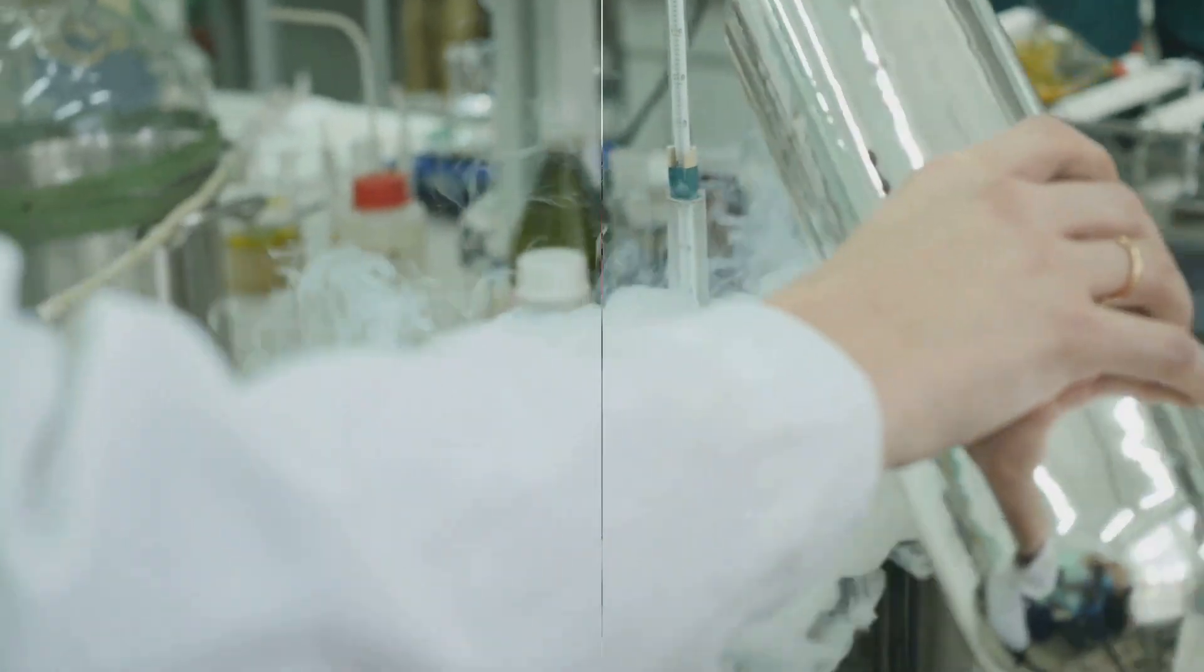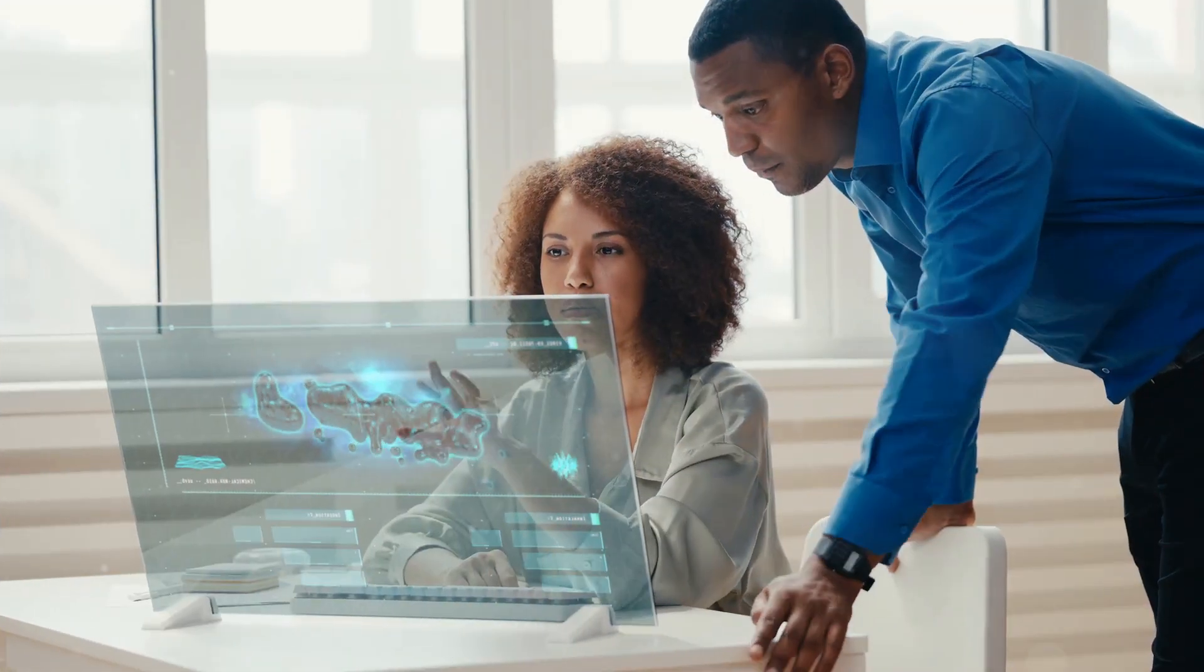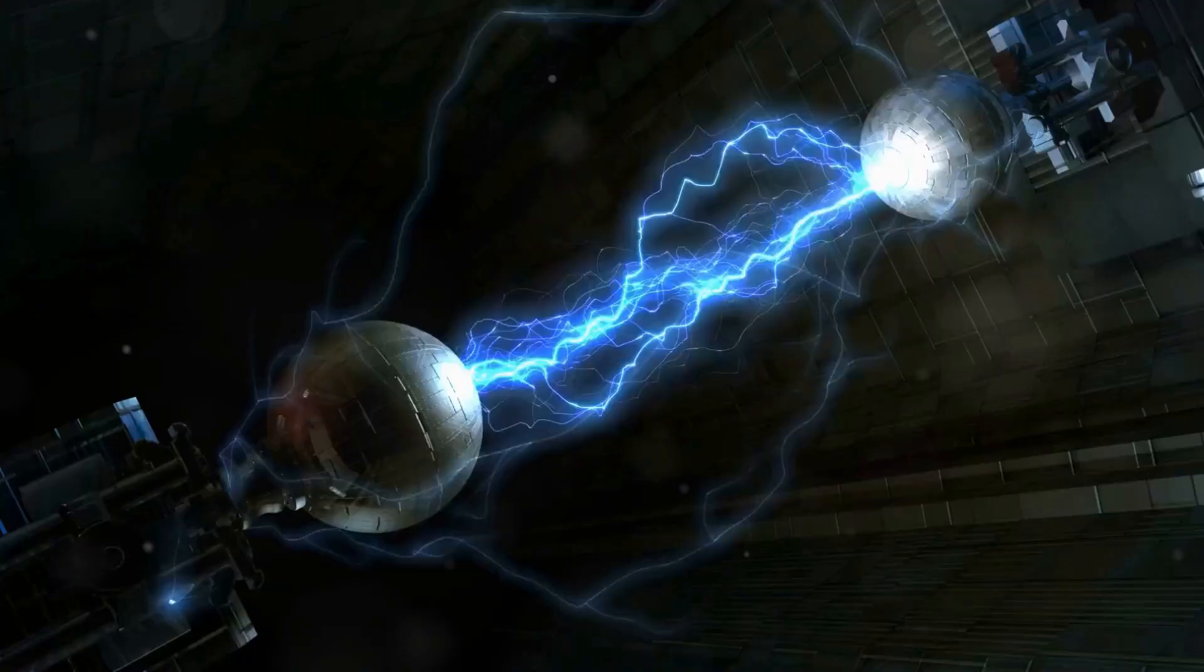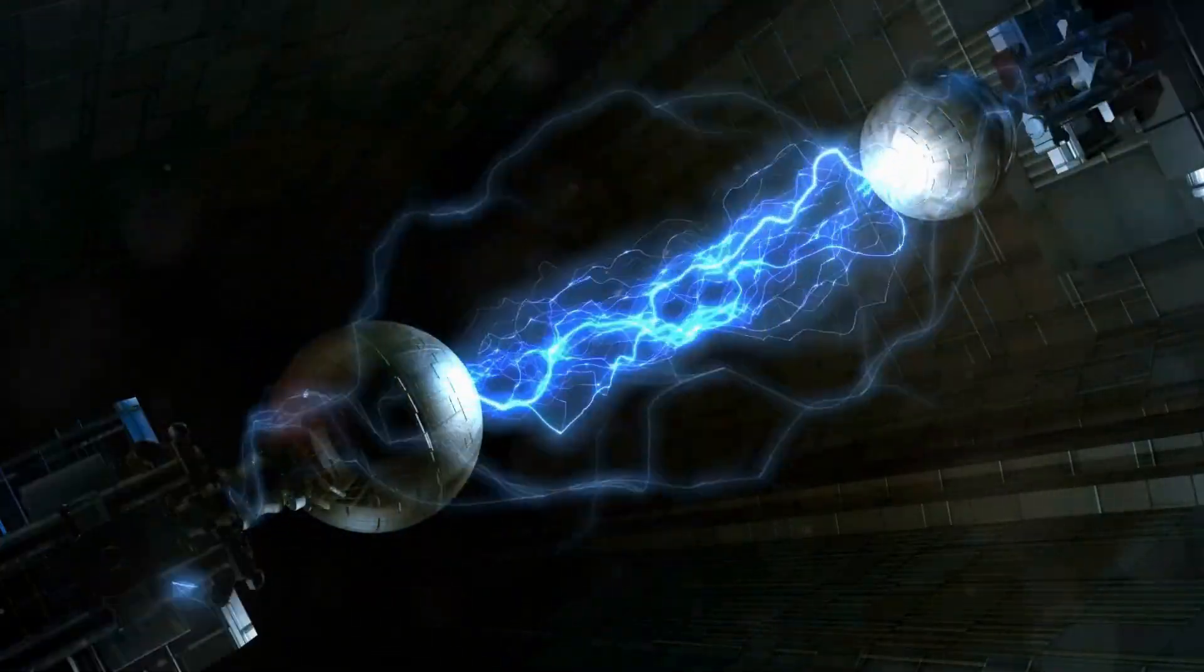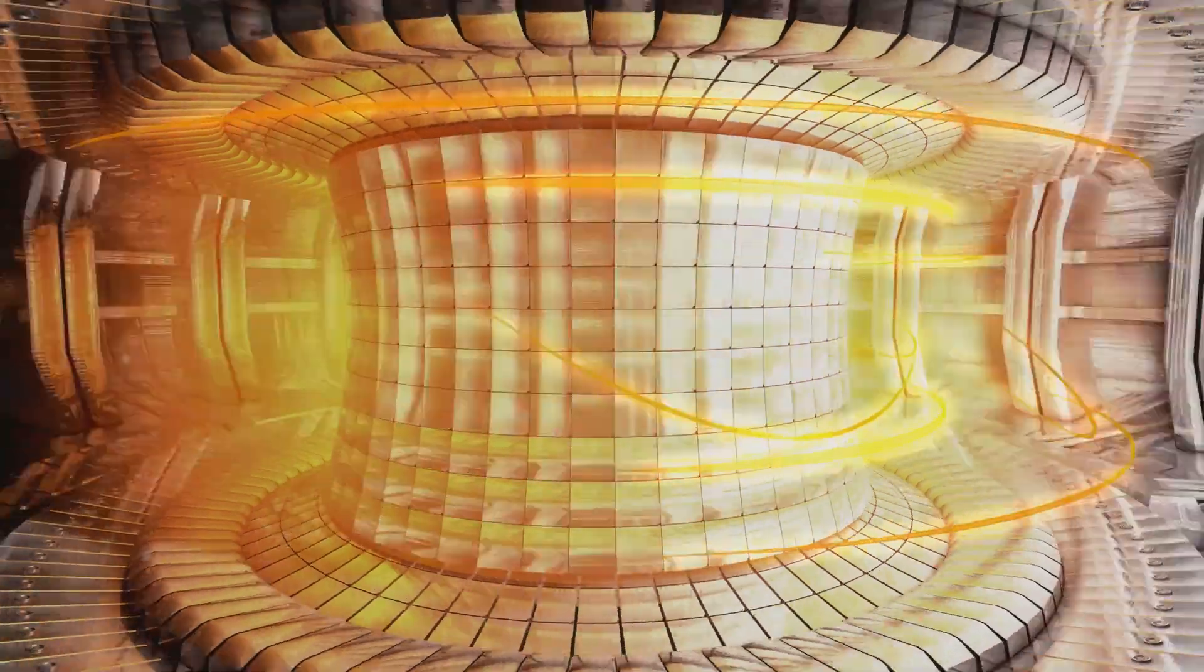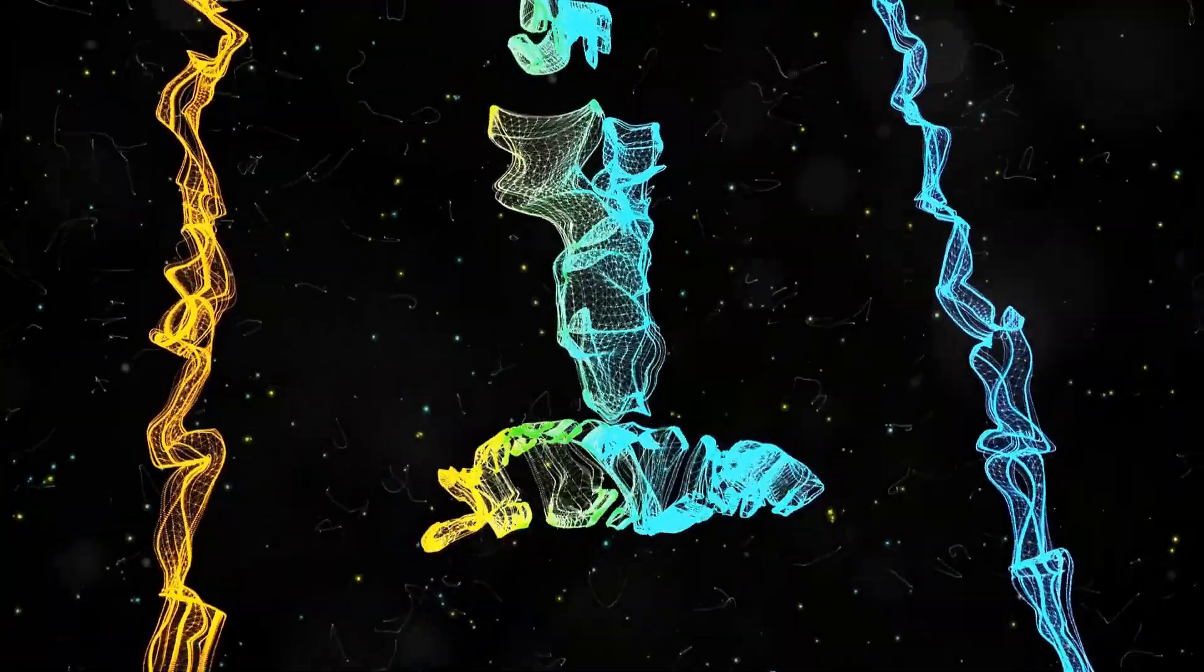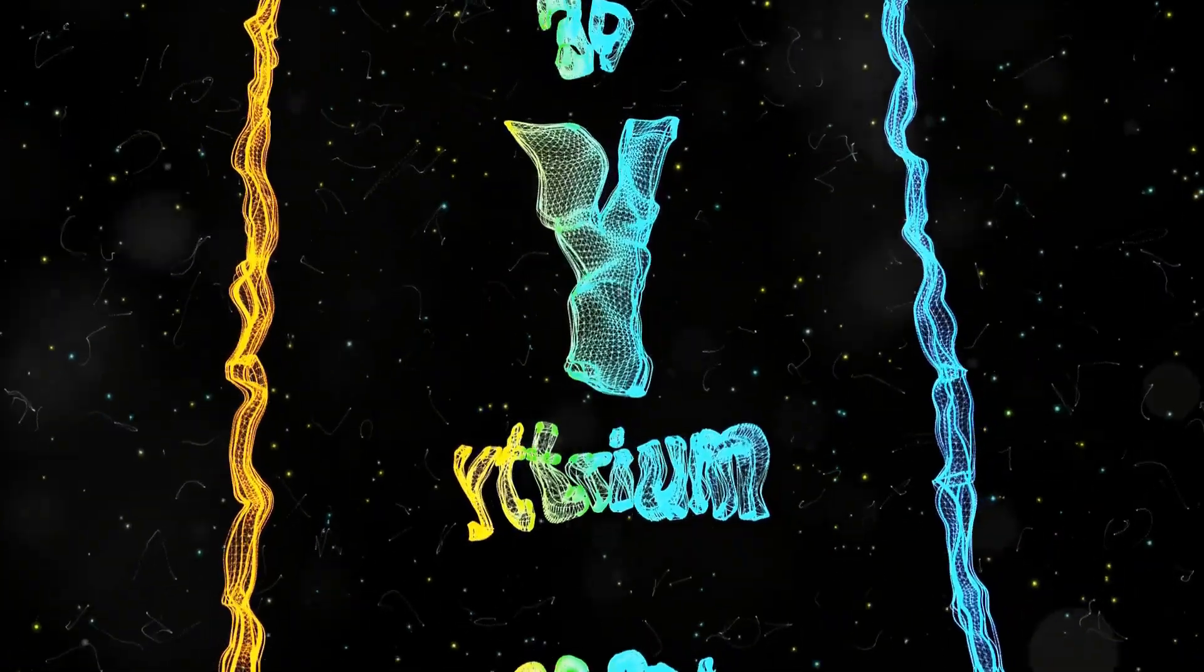In April 2024, a team of researchers announced a groundbreaking discovery: a new type of superconductor that operates at room temperature. This new material, composed of hydrogen, sulfur, and a rare earth element called yttrium, exhibits superconductivity at temperatures up to 27 degrees Celsius, or about 80 degrees Fahrenheit.